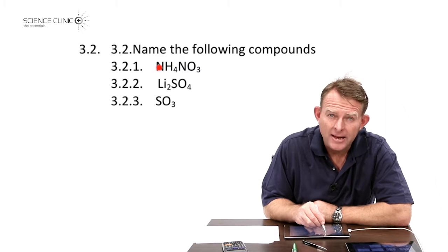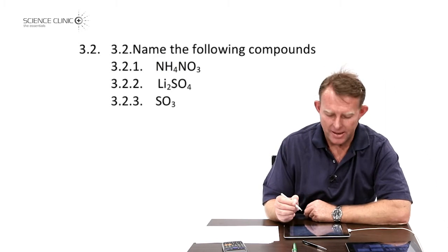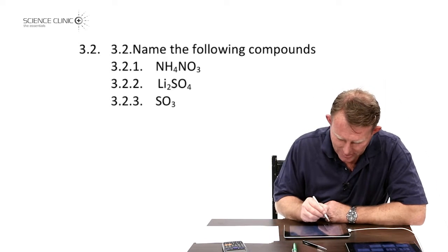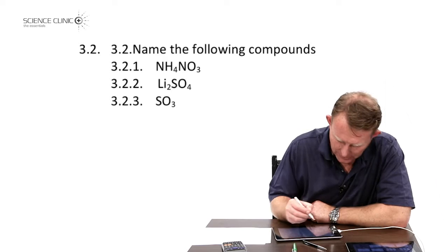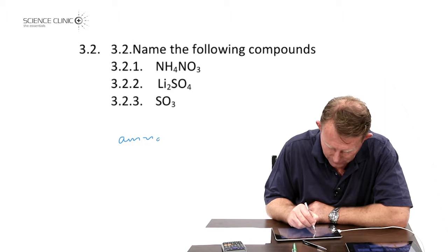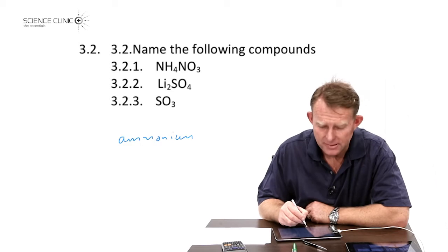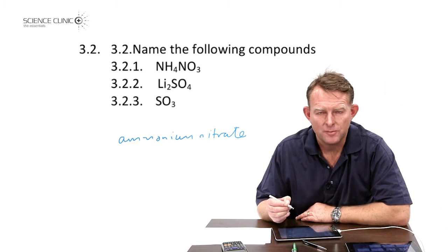We always mention the cation or the positive ion first, followed by the negative ion or the anion. So we could write the name for this: ammonium, that's the cation, followed by the anion here, nitrate. And there we have the name of the first compound.